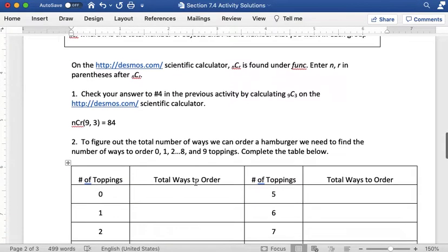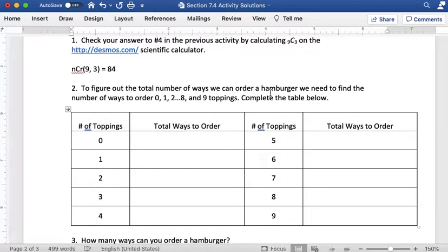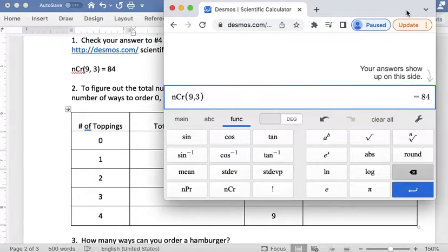Now we're going to use the calculator to find the total number of ways that we can order a hamburger with different numbers of toppings. We could repeat that same process for each number of toppings, but to make this a little bit quicker we're going to use the nCr button on our Desmos.com calculator. We'll start with zero here and the nice thing about this is I can just change my calculator calculation and that's really easy to give me a new value.